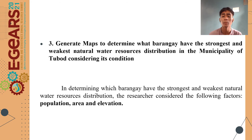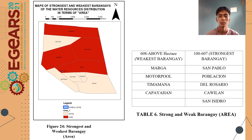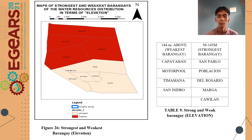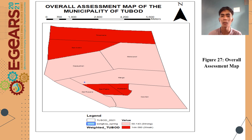For the last objective, maps were generated to determine which barangay would have the strongest and weakest natural water sources distribution. The researchers considered three factors: population, area, and elevation. The slides show the strongest and weakest barangay in terms of population, the strongest and weakest barangay in terms of elevation, and the overall assessment of the municipality considering population, area, and elevation.